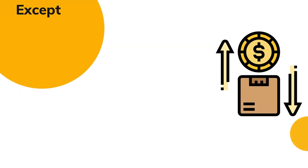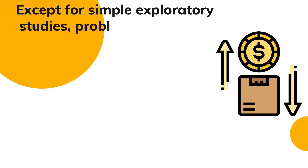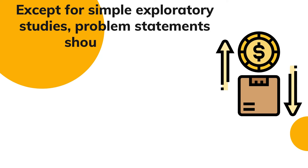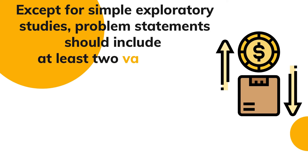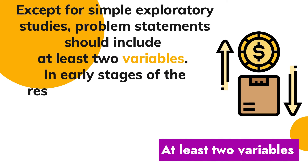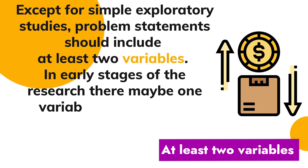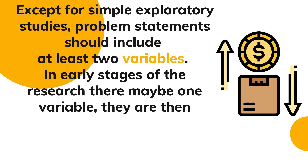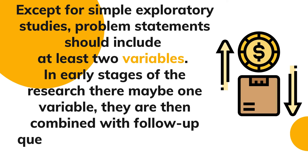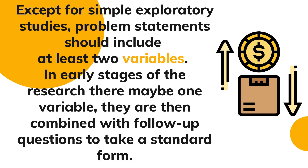Secondly, except in the case of a simple exploratory study, problem statements should include at least two variables. One of these variables could be a constant. In the early stages of research, the researcher might start with only one variable, but this should generally be followed up with the standard form of two or more variables.